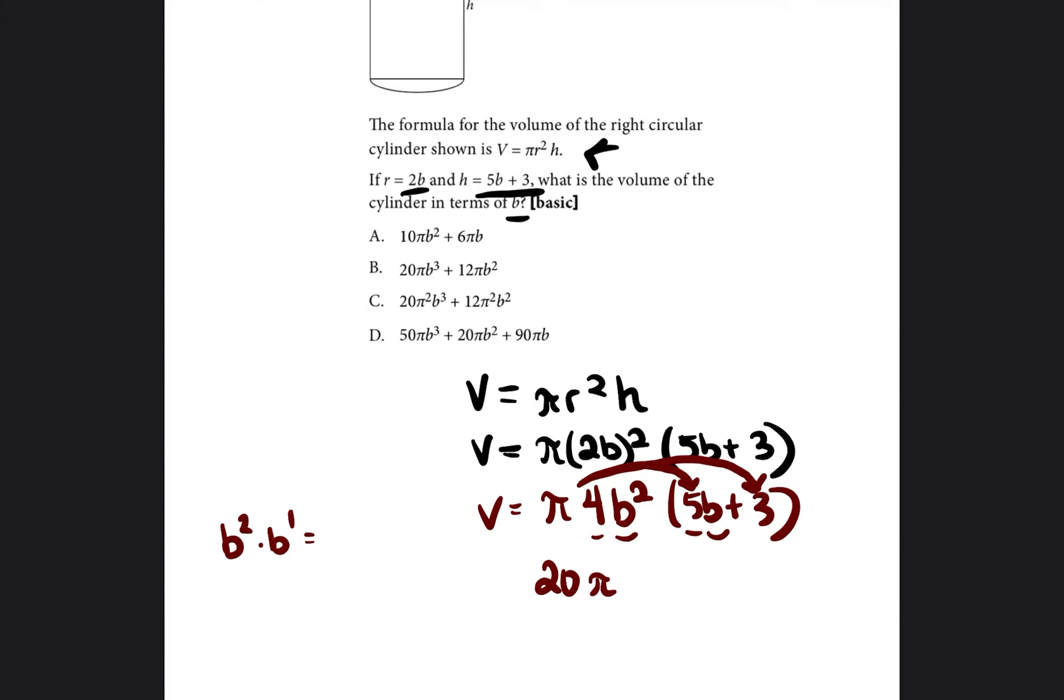Remember, when you're multiplying variables, you just add the exponents when they have the same base. They have the same base of b, so we would just do b to the 2 plus 1. So it would be to the third power, b to the third power. So we multiplied everything by 5b.